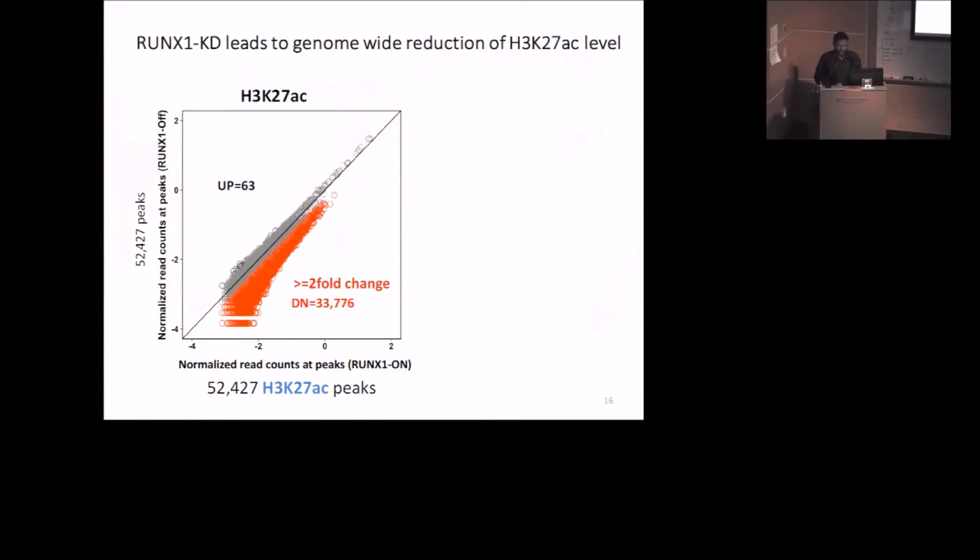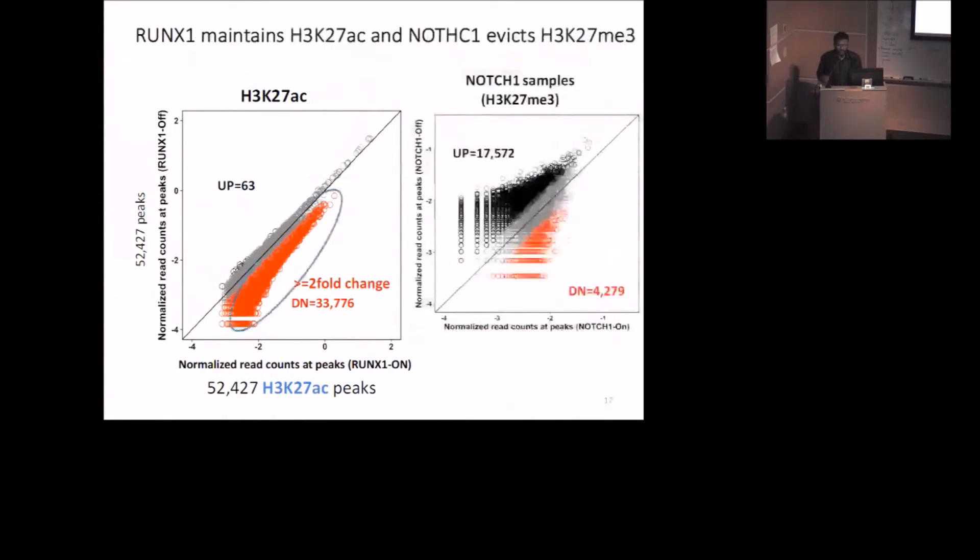Then I looked at those genes, what is the changes of the repressive mark when we knock down NOTCH1 gene. We found a significant proportion of those regions gain the repressive mark. That is telling us the same genomic regulatory regions where RUNX1 deposits the active enhancer mark and NOTCH1 removes the repressive mark from the same regulatory regions.